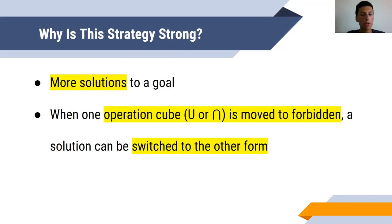Additionally, when one operation cube, like union or intersection, is moved to forbidden, a solution can be switched to the other form. If I had that same solution, red intersection blue in parentheses prime, but the intersection got moved to forbidden, I could switch to the other side of De Morgan's law that has the union. So it gives more flexibility.